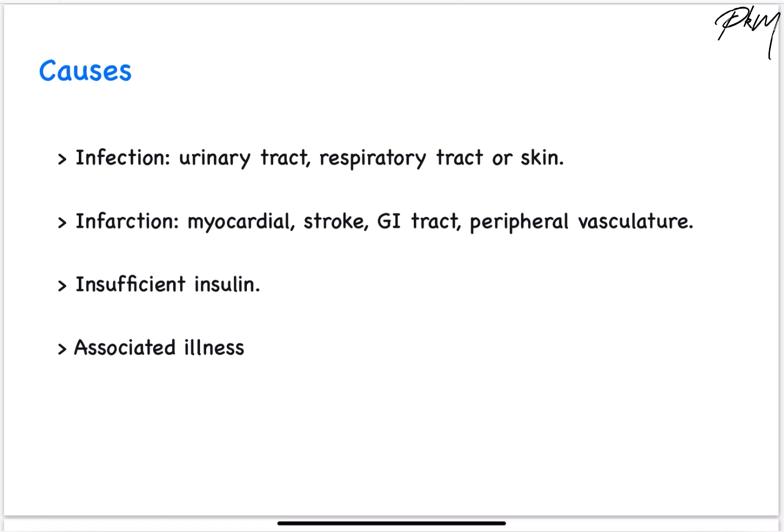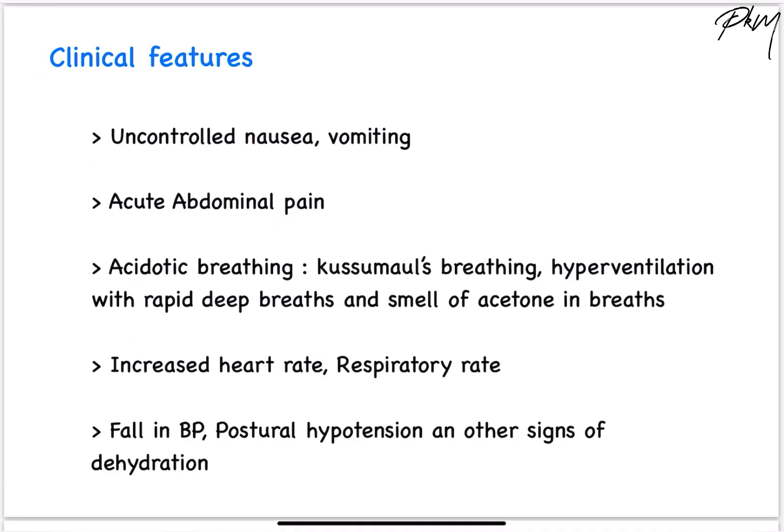Coming to causes: infection, infarction, and insufficient insulin contribute to hyperglycemic crisis. Clinically, the patient presents with acute abdominal pain associated with uncontrolled nausea and vomiting. The patient also presents with a pathognomonic breathing pattern called Kussmaul breathing, which is hyperventilation with rapid deep breaths. This is pathognomonic of diabetic ketoacidosis. Due to dehydration, there is increased heart rate, fall in BP, and postural hypotension.